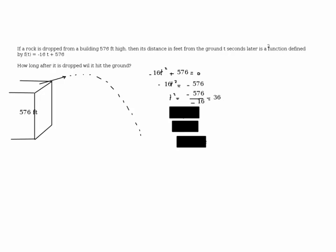So you get t² = 36. So t would be equal to plus and minus the square root of 36. But the time has to be positive, so t would be equal to 6 seconds.